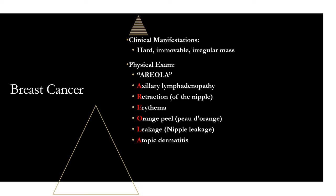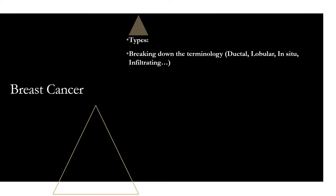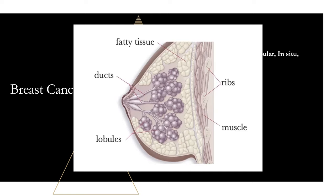Let's break down the most important types of breast cancer and key terminology. The terms you'll hear are in situ, infiltrating, ductal, and lobular. In the breast, you have lobules — which produce milk — and ducts, which carry milk from the lobules to the nipple. If the cancer is in the duct, it's called ductal carcinoma. If it's in the lobule, it's called lobular carcinoma.